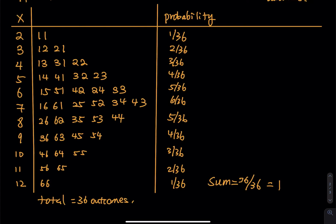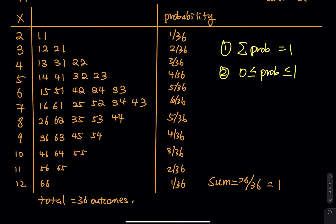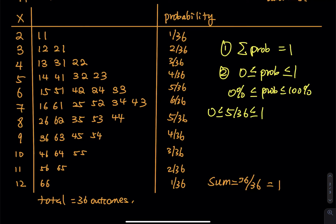So what important characteristics do you see here? I see two very important characteristics. The first one is: the sum of all the probabilities is equal to 1 — no exception, the sum must equal 1, just like the sum of all relative frequencies in a frequency distribution table. Number two: each probability is between 0 and 1. If you use a decimal or percentage, that's between 0% and 100%. So 5/36 as a decimal is between 0 and 1. Probability must be between 0 and 1 — no negatives, no greater than 1.